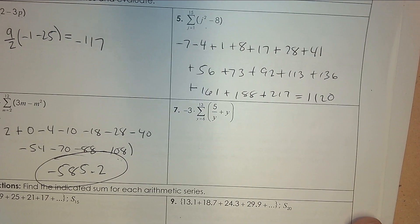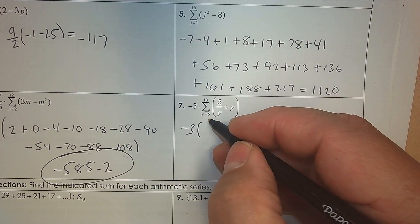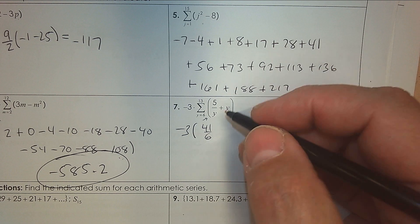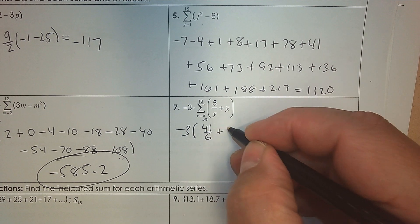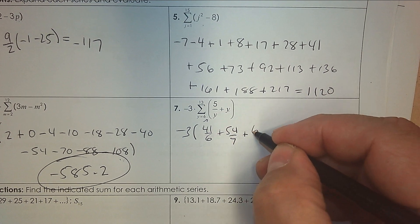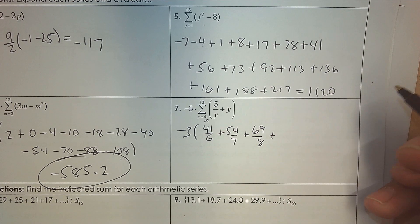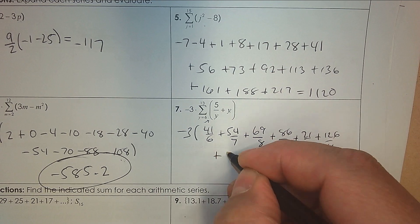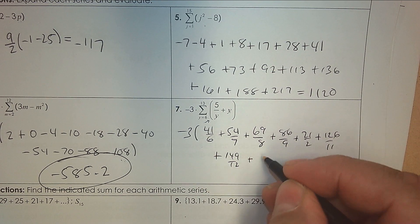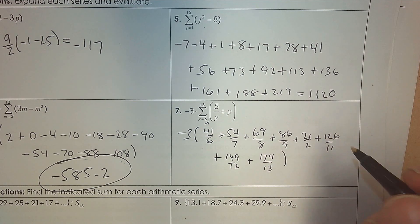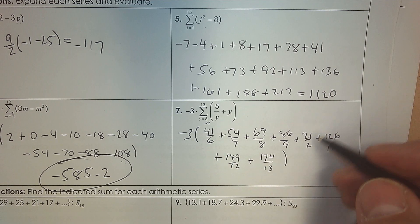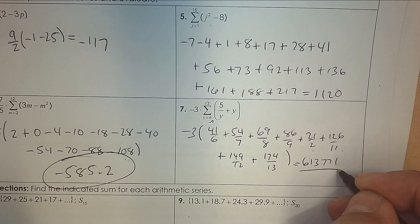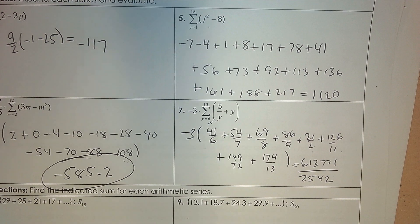One more, then we'll focus on arithmetic. Here we have negative three. Plug six in first — you get five over six plus six. Get common denominators; you can use your calculator. Then plug in seven, eight, nine — keep getting common denominators. The calculator will automatically do common denominators for you as a fraction if you don't press diamond-enter. Keep plugging in and stop when you plug in 13. So you plug in six through 13 — that's in lowest terms. Then your answer as a fraction would be 613,701. This is total calculator work.